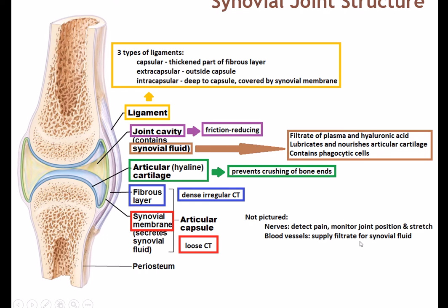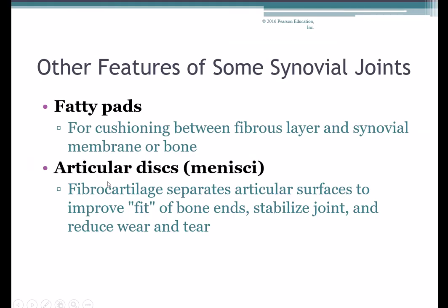The blood vessels supply the filtrate — the plasma — that eventually becomes the synovial fluid. Mechanoreceptors monitor the position and stretch of joints so we don't overstretch them. There are three types of ligaments associated with synovial joints: capsular ligaments, which are a thickened part of the fibrous layer of the articular capsule; extra-capsular ligaments, found outside the articular capsule; and intra-capsular ligaments, which are deep to the capsule, typically wedged between the fibrous layer and the synovial membrane.